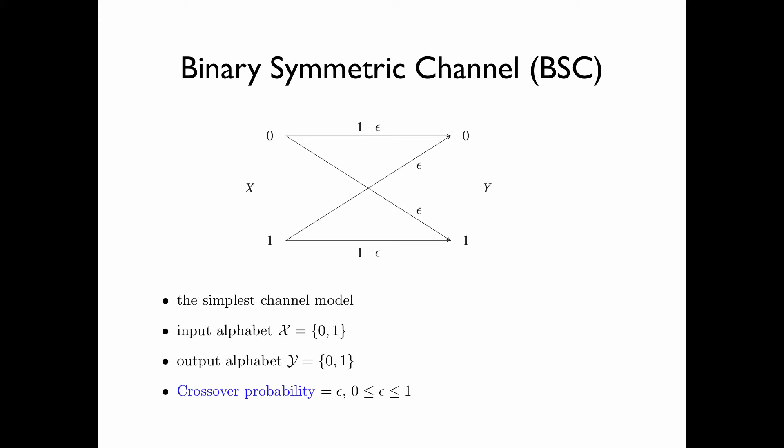The idea is that if we input a 0 to the channel, then with probability 1 minus epsilon we receive 0 — we call this a correct reception — and with probability epsilon we receive a 1, and we call this a crossover. Likewise, if we input a 1, we will receive 1 with probability 1 minus epsilon, and receive 0 with probability epsilon. For this reason, epsilon is called the crossover probability — that is, the probability that what we receive is not the same as what we input to the channel.